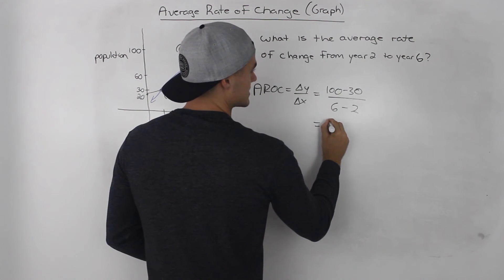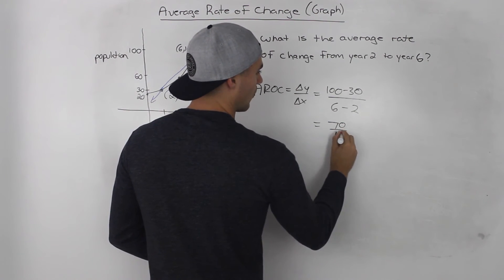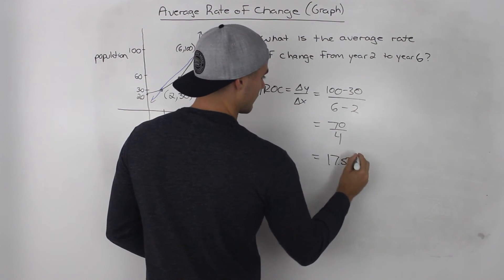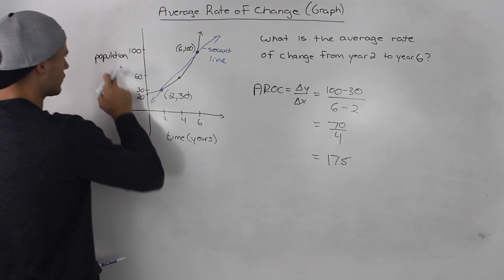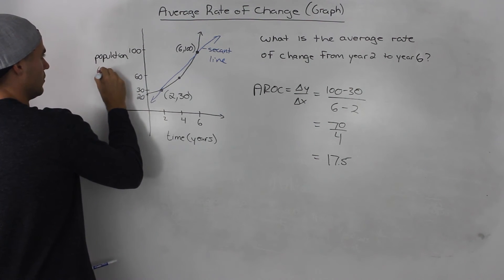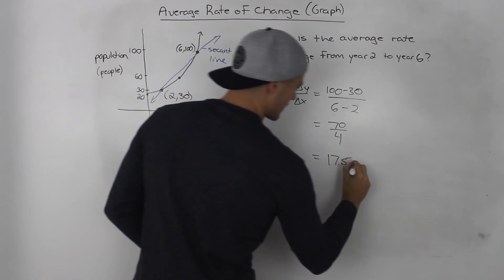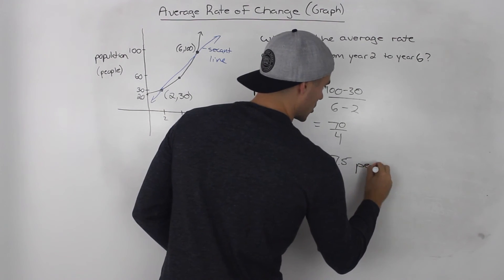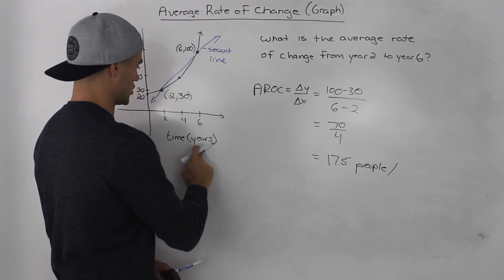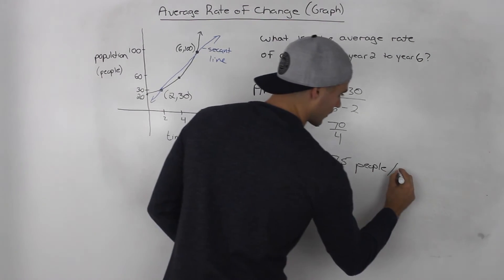So this is 70 over 4, and this would give us 17 and a half. So 17 and a half people per one unit change in the independent variable, per year.